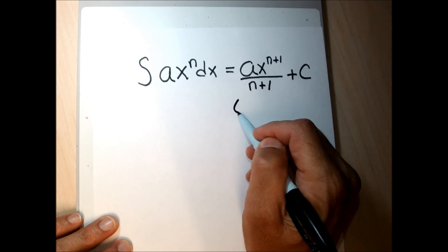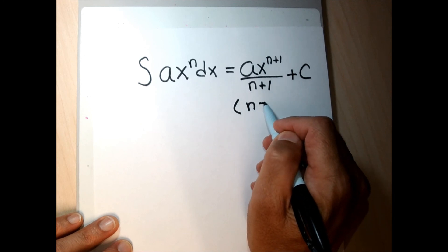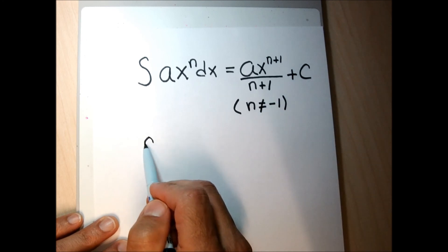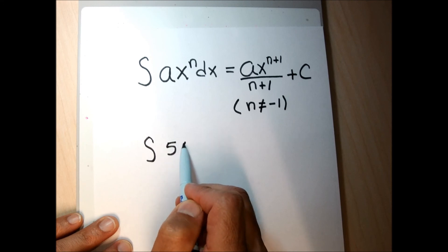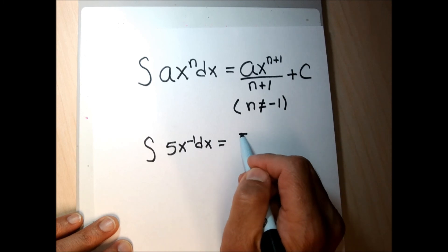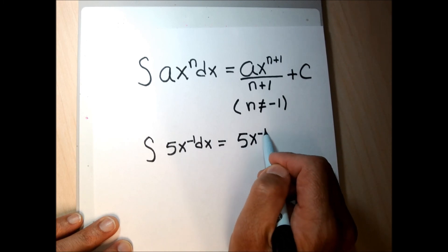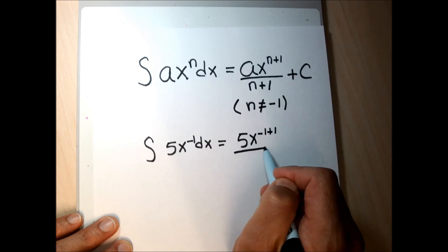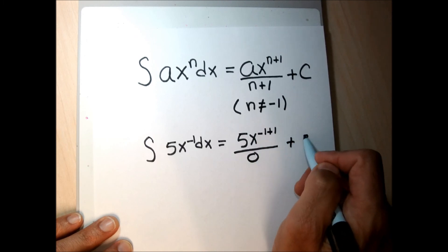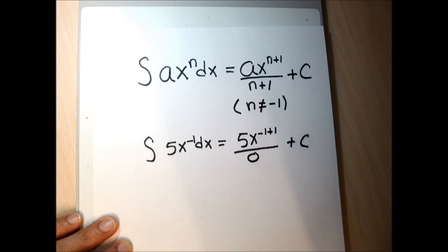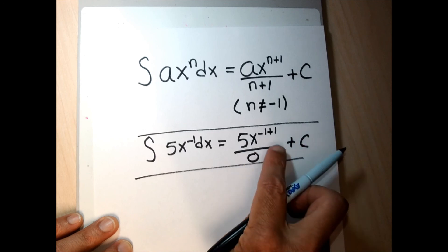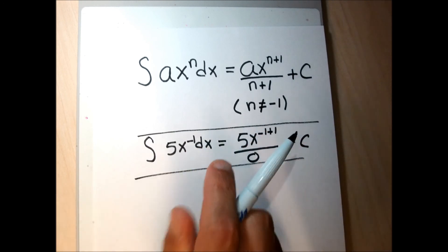This formula is good for all values of n except n equal to negative 1. If I applied this rule to x to the negative 1, I'd get x to the negative 1 plus 1, divided by negative 1 plus 1, which gives x to the zero over zero — undefined. Right at the end of the section I'll address what to do when the exponent is negative 1.